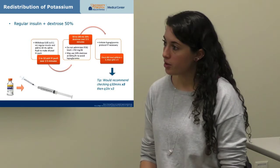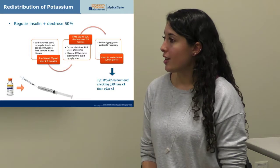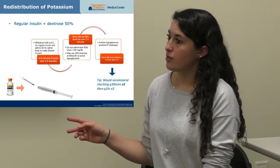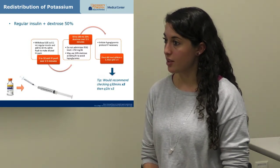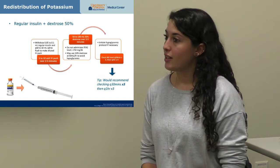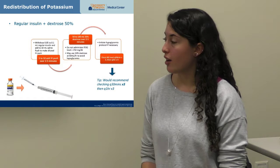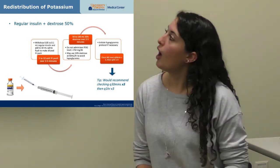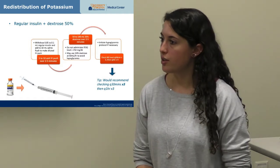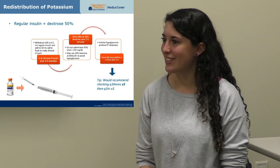Blood glucose should be checked according to protocol twice every 30 minutes and then hourly — though checking three times at 30-minute intervals before extending to hourly is safer, because after the first check you give both insulin and dextrose, the dextrose may cause a temporary glucose rise, and then around the third 30-minute mark is when hypoglycemia is most likely to occur. When drawing up the 5 or 10 unit bolus, mix it into a saline flush so it can be administered as 10 mL over 2 to 5 minutes.